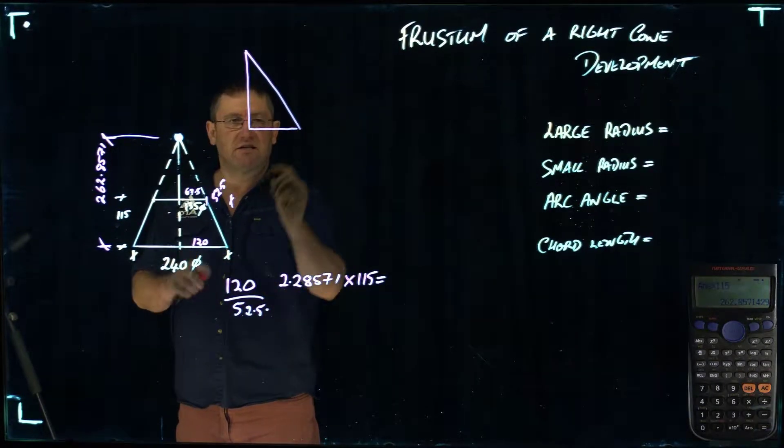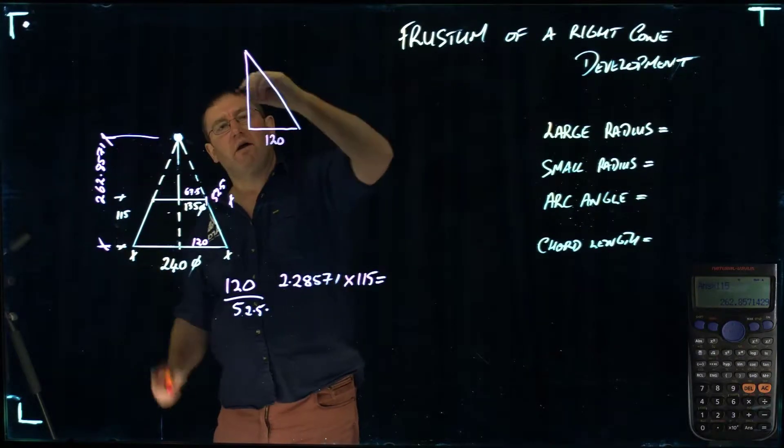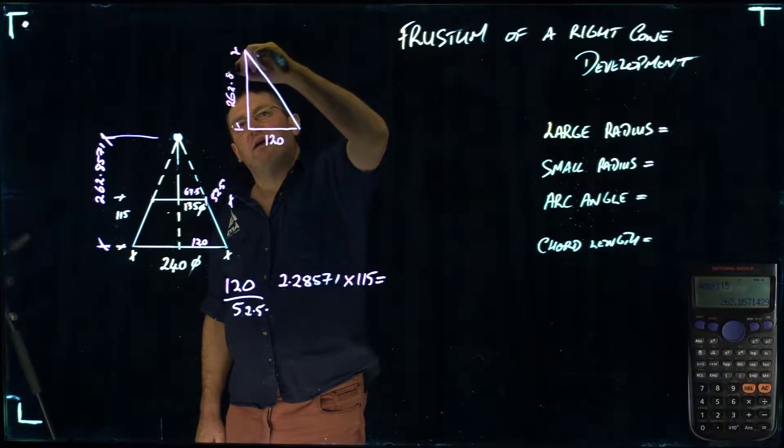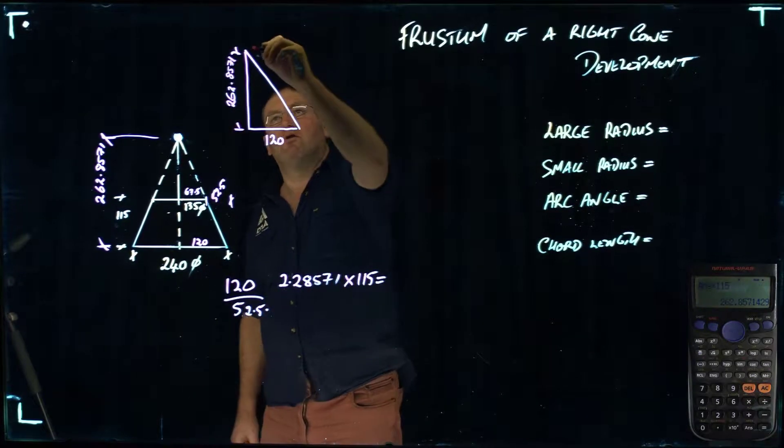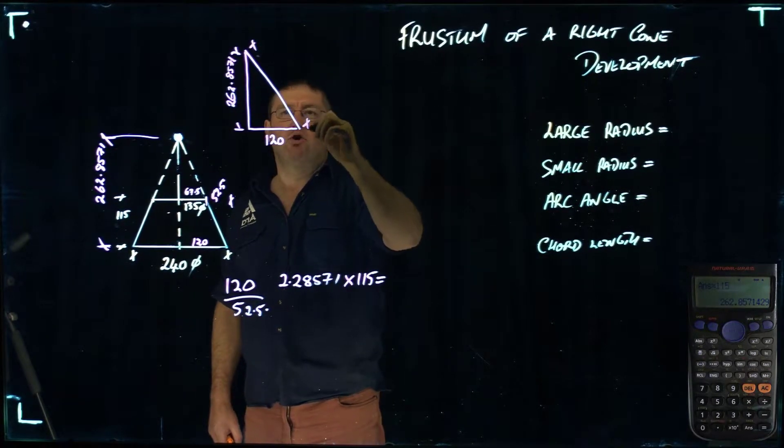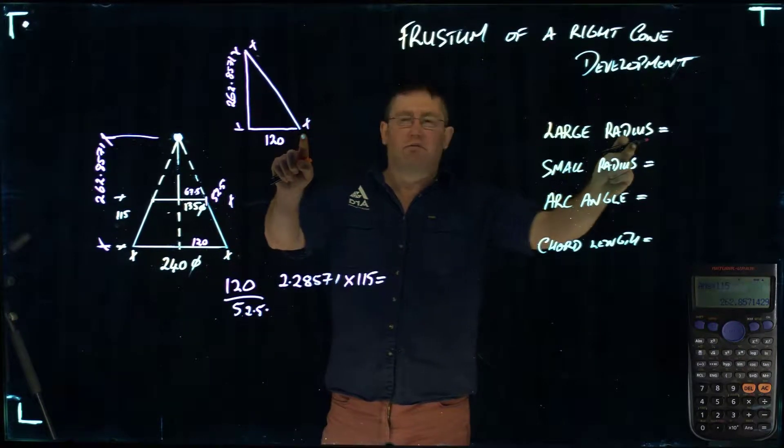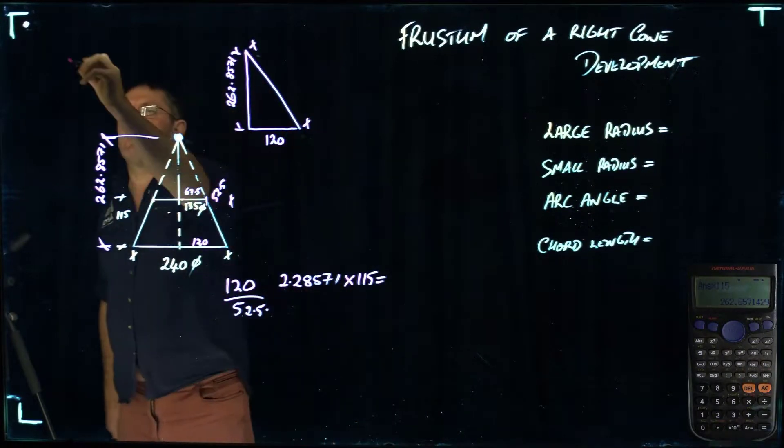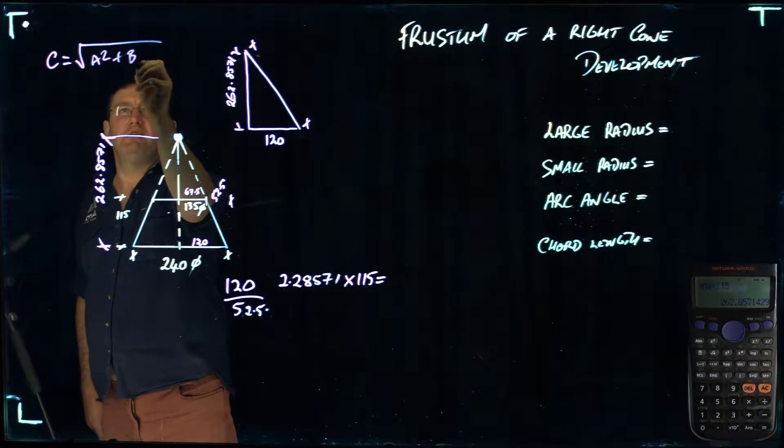I'm going to draw that triangle. My radius at this point is 120mm. My vertical height from here to here is 262.8571. What I want to determine is this length along here, and that's going to become my large radius for developing out my pattern. With Pythagoras' theorem, it's C equals the square root of A squared plus B squared.